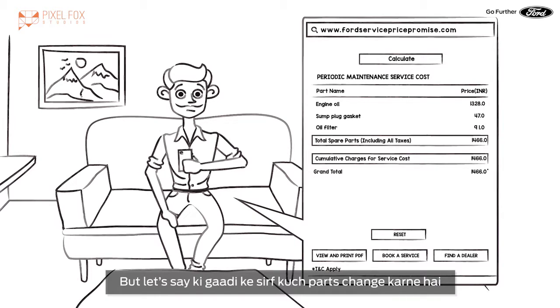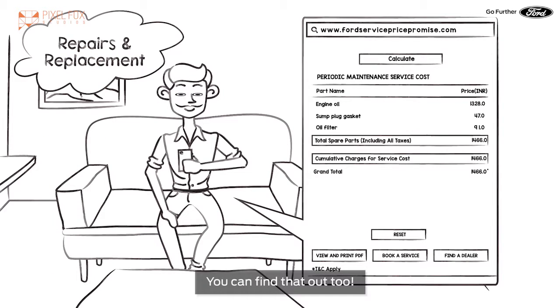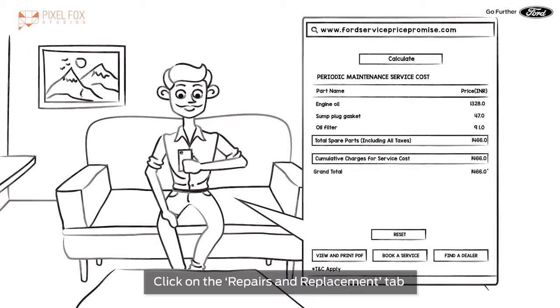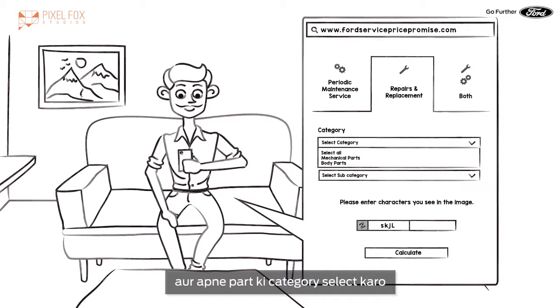But let's say ki gaadi ke sirf kuch parts change karne hai. You can find that out too. Click on the repairs and replacement tab. Aur apne part ki category select karo.